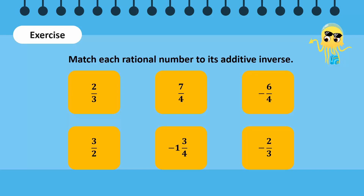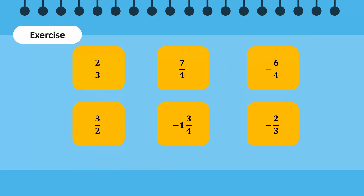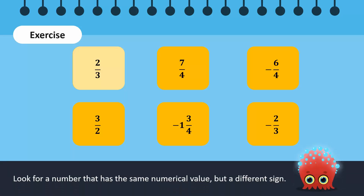To find the additive inverse of two over three, look for a number that results in zero when it's added to it. Since two over three is positive, its additive inverse should have the same value but a different sign, so its additive inverse is minus two over three.